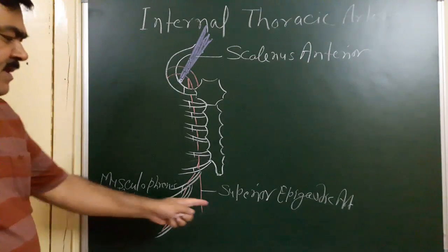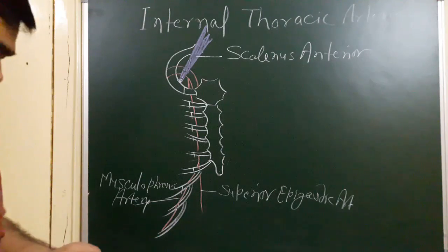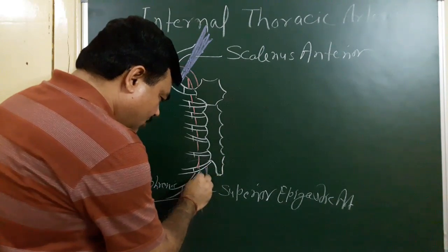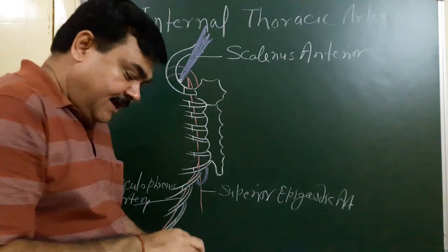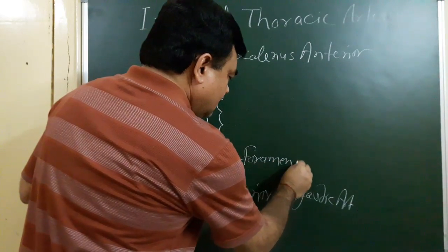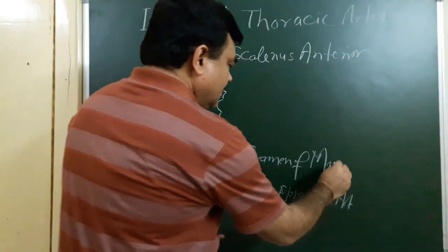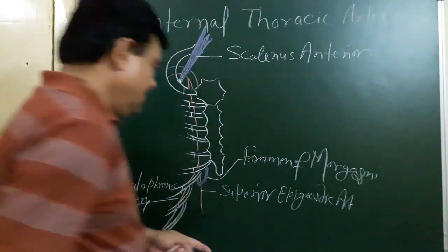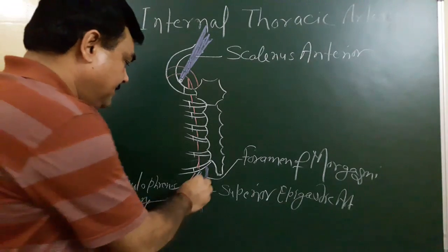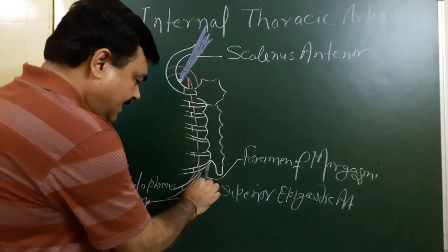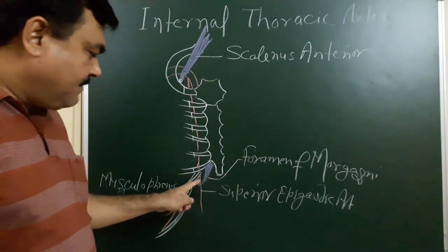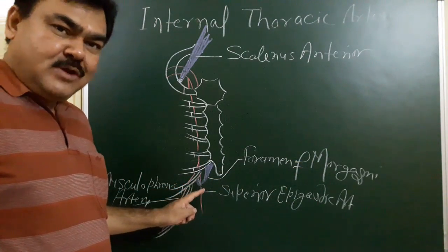This is the superior epigastric artery. It passes through a foramen which is present here, known as the foramen of Morgagni. The foramen of Morgagni is formed between the two slips present in the diaphragm — this is the sternal slip and here is the costal slip. The space between the sternal and costal slip is known as the foramen of Morgagni.